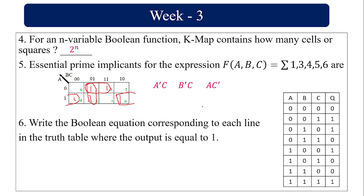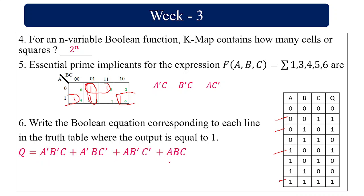Writing the Boolean equation from the truth table where output Q = 1: for each row where output is 1, take the literals A, B, C as given. The minterms are: ĀB̄C, ĀBC̄, AB̄C̄, and ABC. So Q = ĀB̄C + ĀBC̄ + AB̄C̄ + ABC.